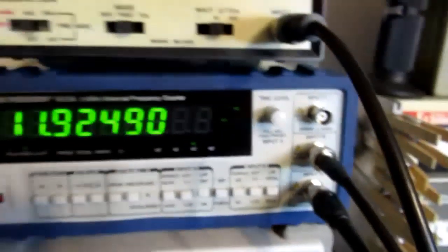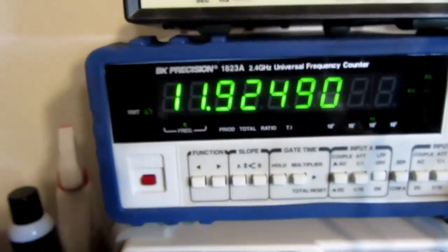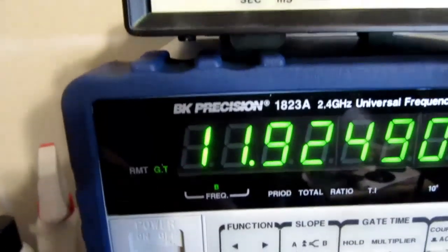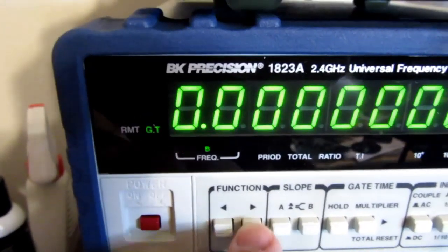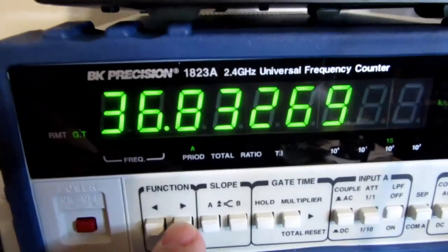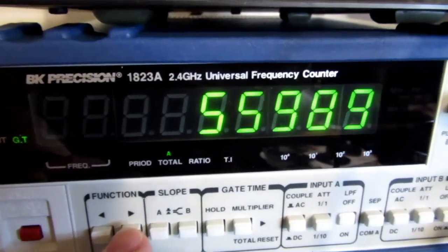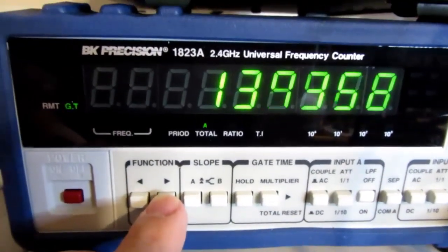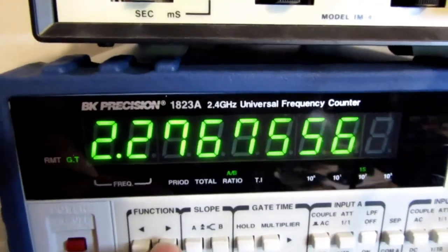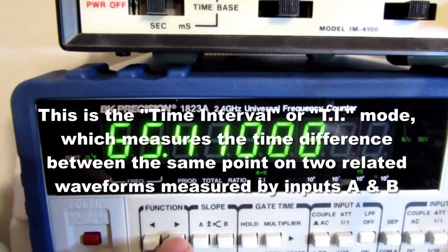There's a bunch of features on here which I won't go into great detail on, but I can select here inputs A, B, or C, or I can go into a period monitoring mode or a totalizer mode where it's basically just a counter, and a ratio between the A and the B inputs.